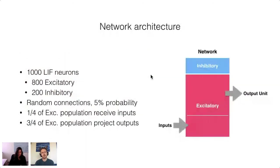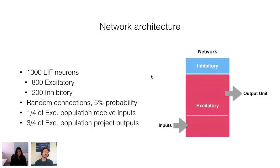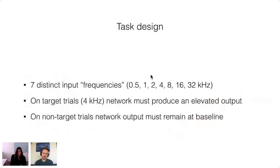The network is comprised of 1,000 leaky integrate-and-fire neurons — 800 excitatory and 200 inhibitory. Neurons obey Dale's law, meaning they are exclusively excitatory or inhibitory. Each neuron synapses onto another randomly with 5% probability, and weights are initialized randomly. A quarter of excitatory neurons receive external inputs serving as the stimulus; the remaining three-quarters are output neurons projecting to an output unit through a distinct set of output weights. Inhibitory neurons don't receive inputs or project outputs but are recurrently connected to the rest of the network. The network is trained so that on target trials it produces elevated activity in the output unit after stimulus presentation, and on non-target trials the network remains at baseline.